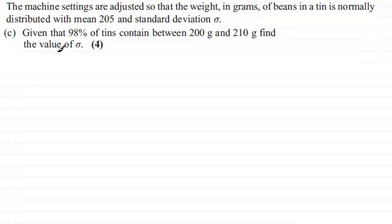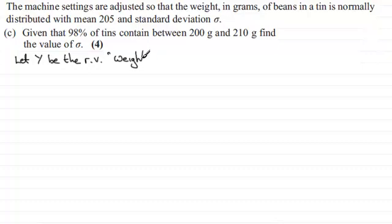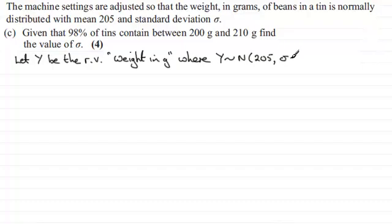So first of all what I'd want to do here is set up a random variable. We've got a new mean here — 205 — compared to what we had in the earlier questions, so I don't want to use the same random variable. I'll use Y this time. Let Y be the random variable for the weight of the beans in grams, where Y is distributed normally with mean 205 and variance sigma squared.